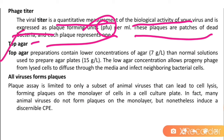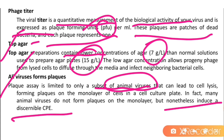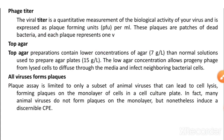Top agar is used in this assay and contains a lower concentration of agar — 7 g/L — compared to the 15 g/L used in normal solutions. Not all viruses form plaques; plaque assay is limited to a subset of animal viruses that can cause cell lysis forming plaques on a monolayer in a single cell culture plate. Many animal viruses do not form plaques but nonetheless induce a discriminable cytopathic effect (CPE). This concludes the bacteriophage plaque assay, where bacteriophages are quantitatively determined from a sample based on plaque formation.